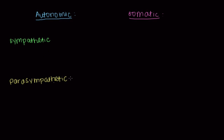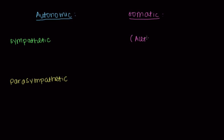The somatic nervous system has just one function: it's trying to control voluntary muscle. The neurotransmitter used here, which you may recall, is acetylcholine. We abbreviate that ACH for acetylcholine.